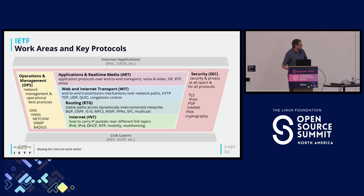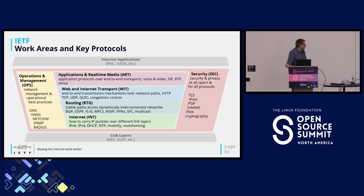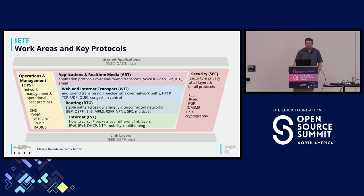IETF has a number of different areas. We interface with other standards organizations — ones that sit above us like W3C and Oasis, and many others. On the bottom are ones specific to different types of links like Wi-Fi and 3G. Each colored area has its own set of working groups underneath it, and the other areas are standards organizations we have liaisons with. That's IETF in one slide — the rest of this talk is about tools and best practices.